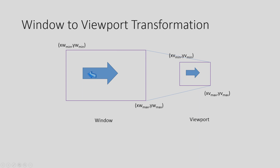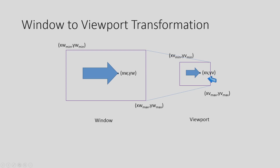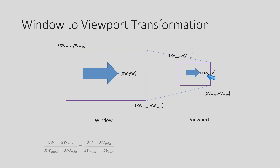Every diagram — for example, this arrow-shaped diagram — is to be defined by individual defining points. Taking a single defining point, such as the tip of the arrow: this point has coordinates x_w, y_w in the window. When shifted to the viewport, this point will be at another location with coordinates x_v, y_v. Our task is to calculate these viewport coordinates x_v and y_v.